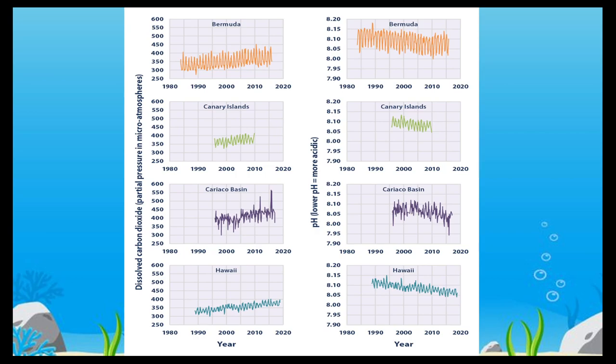Climate change seems to be at the top of the list of factors contributing to declining coral growth. As oceans absorb excess carbon dioxide from the atmosphere, it causes the water to become increasingly acidic, eroding reefs and making growth more difficult. Warming is also responsible for the massive coral bleaching that has taken place over the past several decades — as temperatures reach critical limits, coral expels its zooxanthellae, cutting off its own life support and causing permanent damage.